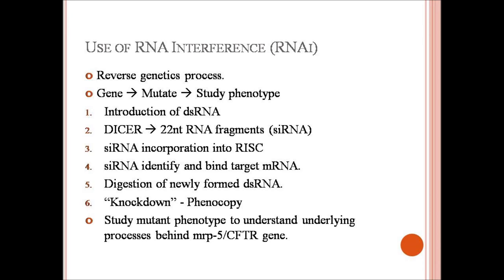SiRNA is incorporated into the RNA-induced silencing complex, or RISC, which then uses the small-interfering RNA to identify target mRNA. After siRNA binds target mRNA, the newly-formed double-stranded RNA is degraded, inhibiting the target mRNA's translation. This results in a gene knockdown, rather than knockout.